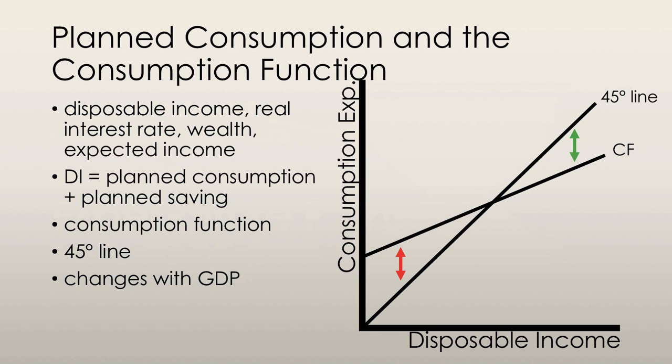The consumption function is the relationship between consumption and disposable income, as you can see by the graph. The y-axis measures consumption, and the x-axis measures disposable income. As we can see, as disposable income increases, consumption expenditure increases.